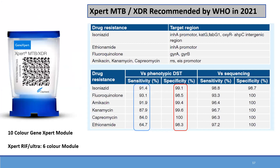People are talking a lot about Expert XDR. Expert XDR has a 10-colour module that detects, apart from rifampicin, the INHA gene using the KatG, FabG1, OxyR genes, as well as GyrA, GyrB, and RRS and EIS promoter genes. Compared to phenotypic DST, it was found to have very good sensitivity and specificity, but sensitivity for aminoglycosides and fluoroquinolones is not very high.